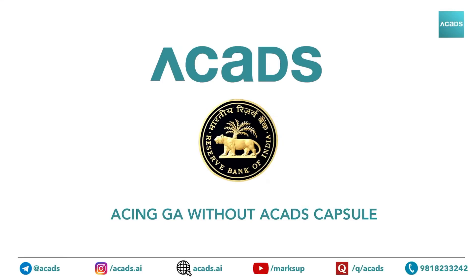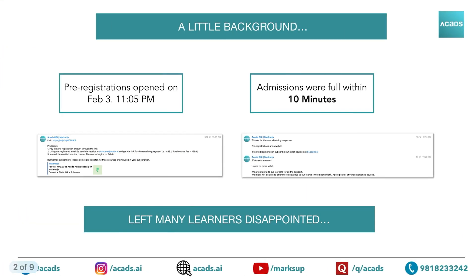Hi everyone, welcome to ACATS.ai. This video is about how you can ace GA without a CATS capsule. First, a little background: on February 3rd, we opened pre-registrations for the GA capsule plus two subsidiary courses — Static GA and Schemes. We planned around 500 seats, but within 15 minutes admissions were full, which left many learners disappointed. This video will address how you can prepare GA without a CAT GA capsule and ace it easily.